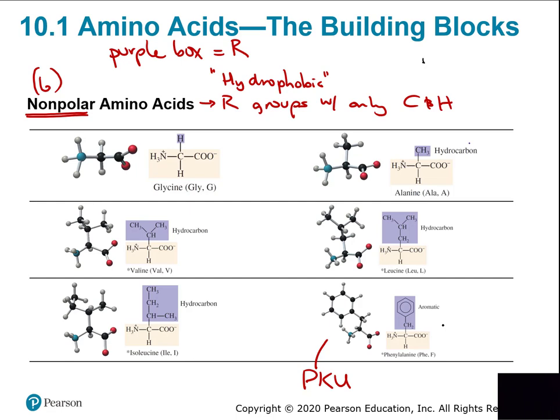Once a child with PKU grows out of the rapid growth stage, it's not as critical. The key point: non-polar amino acids are hydrophobic because their R group is non-polar — nothing but carbon and hydrogen.